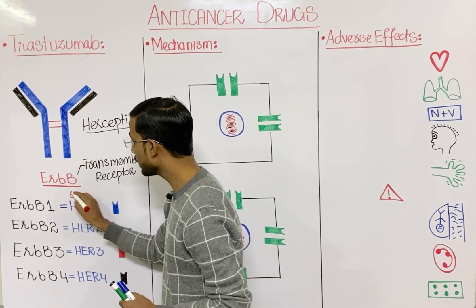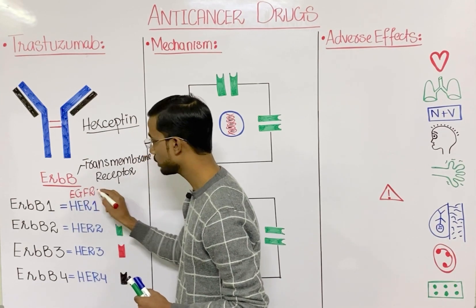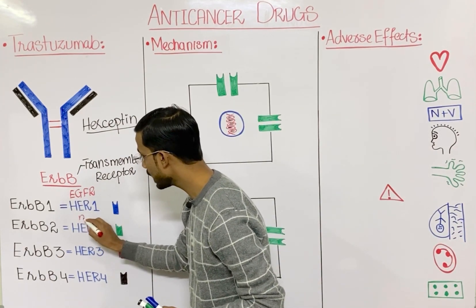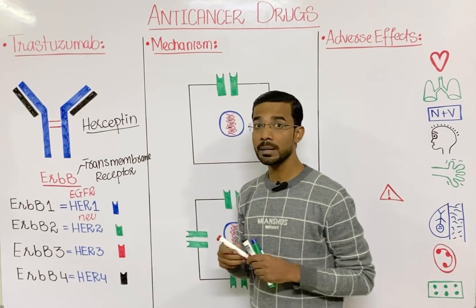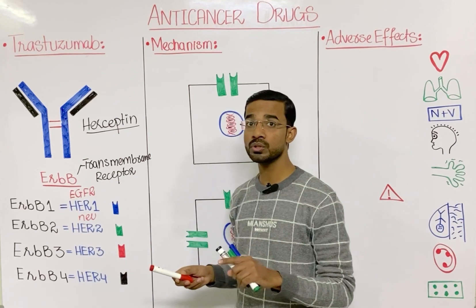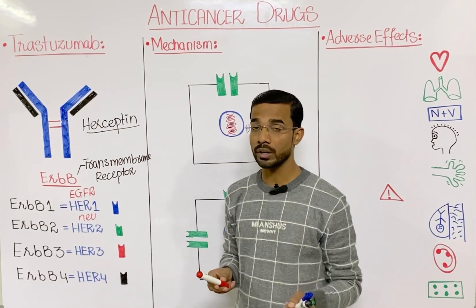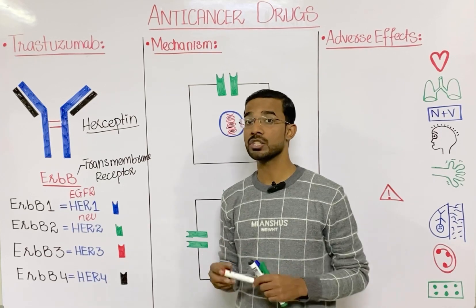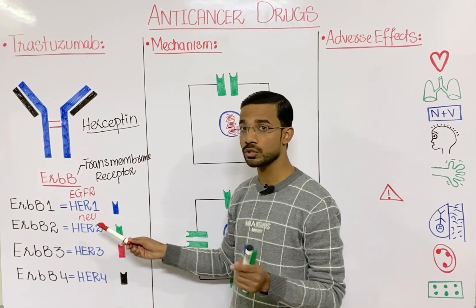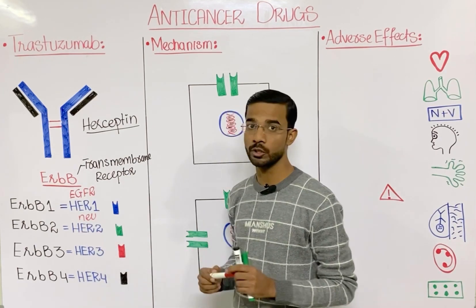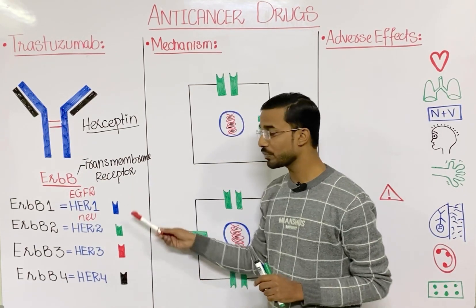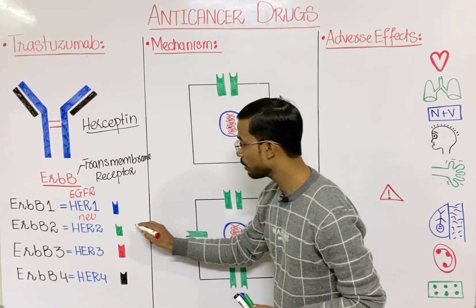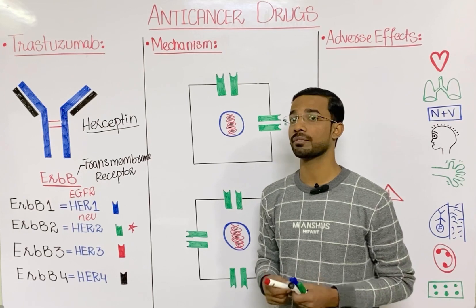These are basically different names for the same receptors. An important point: HER1 is also known as epidermal growth factor receptor (EGFR), and HER2 has another name — neu (N-E-U). HER2 is the term used for humans, but neu is used for rodents, because in rodents it was first discovered in glioblastoma, a neural tumor. That is why it is called neu in rodents and HER2 in humans. These are basically the different receptor proteins.